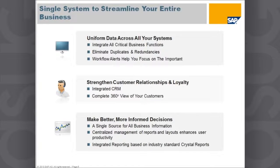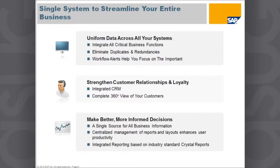Fundamentally, SAP Business One gives you a single system that streamlines your entire business and provides uniform data across all your systems. No longer will you have separate applications for accounting, CRM, and manufacturing — you'll have one application integrating all those critical business functions. It helps you eliminate duplication and redundancy, and the workflows and alerts in the system help you focus on the things that are important.